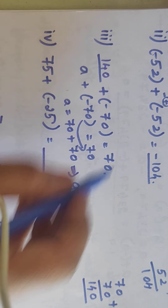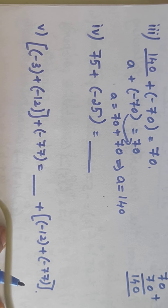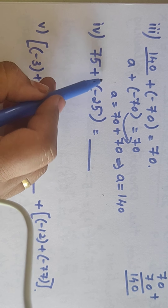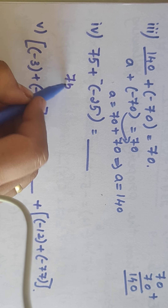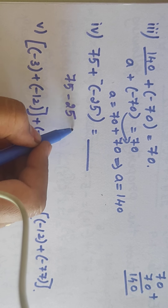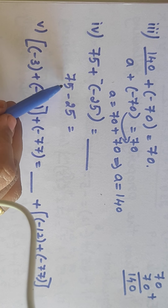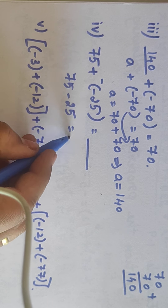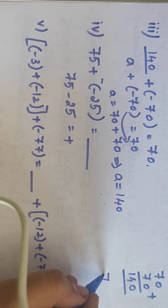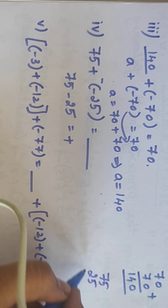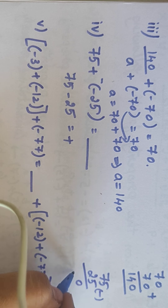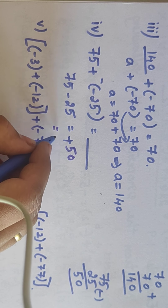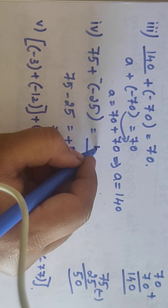Next: 75 plus (-25). Plus into minus is minus. So 75 minus 25. The biggest number is 75, so the symbol is plus. Now 75 minus 25: 5 minus 5 is 0, 7 minus 2 is 5. The answer is 50.